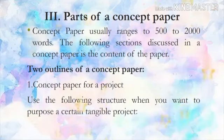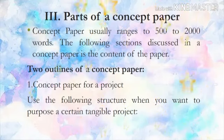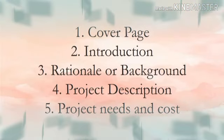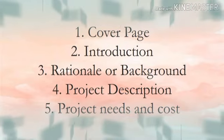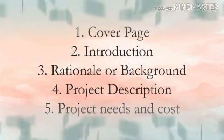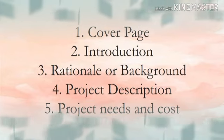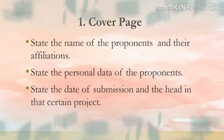The parts of a concept paper. A concept paper usually ranges from 500 to 2,000 words. There are two outlines of a concept paper. The first one is the concept paper for a project. Use the following structure when you want to propose a certain tangible project: first, cover page; second, introduction; third, rationale or background; fourth, project description; and the last is project needs and cost.